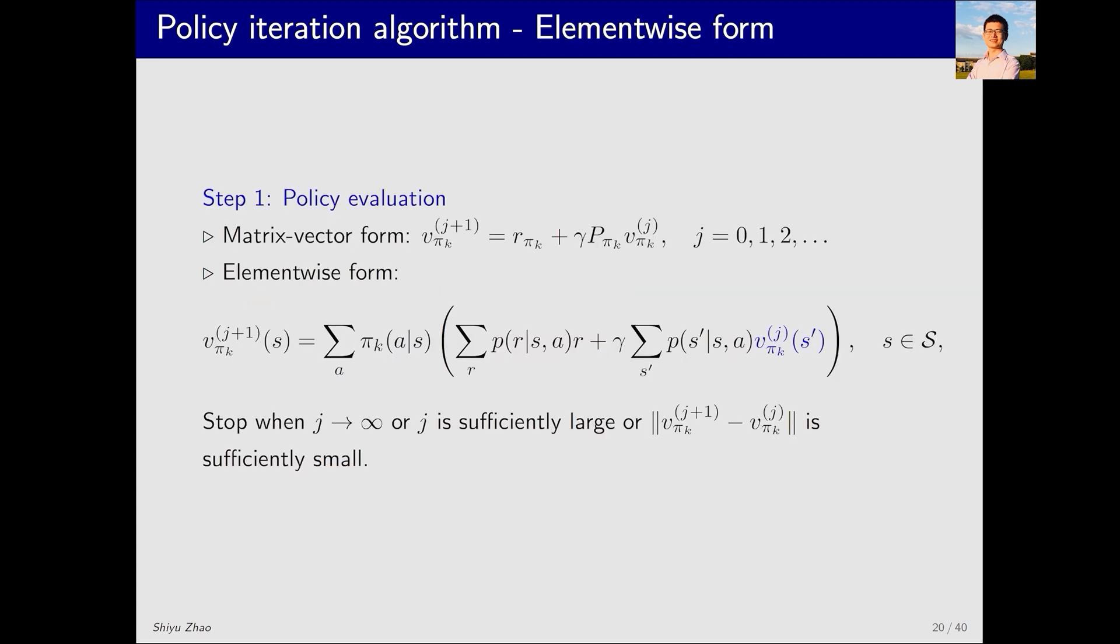Let's now discuss how to implement the policy iteration algorithm. To implement this algorithm, we need to consider its element-wise form. First, let's examine the first step, policy evaluation. This is its matrix-vector form, which is an algorithm that iteratively solves a Bellman equation. Its element-wise form can be described as this. Initially, I have a value for vπk^j, where this superscript j represents the value of vπk estimated at the jth iteration. These are known quantities, and πk is given. Thus, through this, I can calculate the left-hand side, and then substitute the left-hand side back into the right-hand side, iterating until convergence. Once they converge, we know we have found vπk, completing this step.